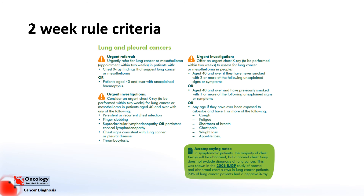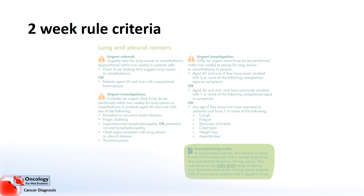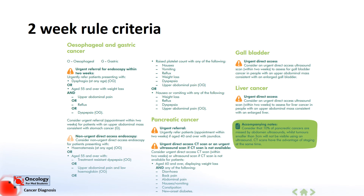For the lung cancer section, we can see that hemoptysis — coughing up blood — is very high up on the list. We can also see that fatigue, shortness of breath, and weight loss are mentioned. For oesophageal cancers, dysphagia or difficulty swallowing could be a sign of a tumour blocking the food pipe, and for pancreatic cancers we can see that jaundice is high up the list, as we explained earlier.